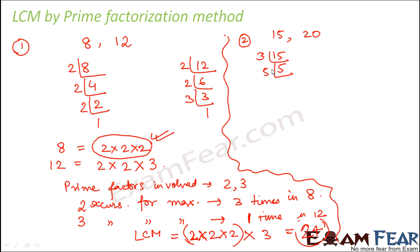So with prime factorization method we can write 15 is equal to 3 into 5. Similarly for 20 also if you do prime factorization method. So you find that 20 is equal to 2 into 2 into 5. So which are the prime factors that are involved in this case? What are the prime factors involved?